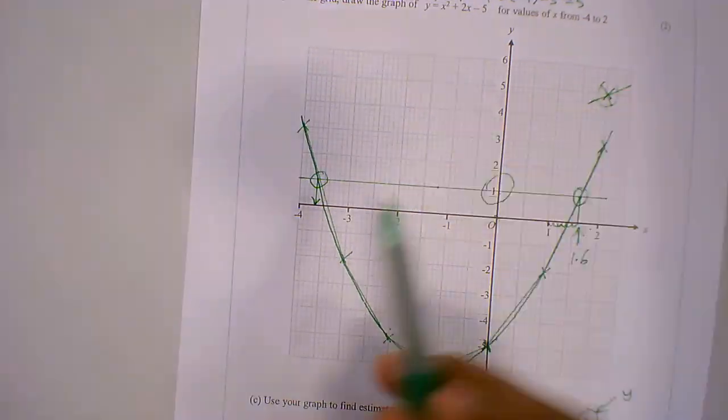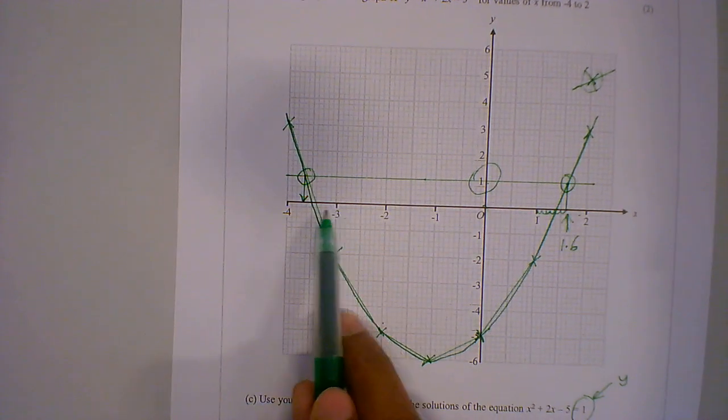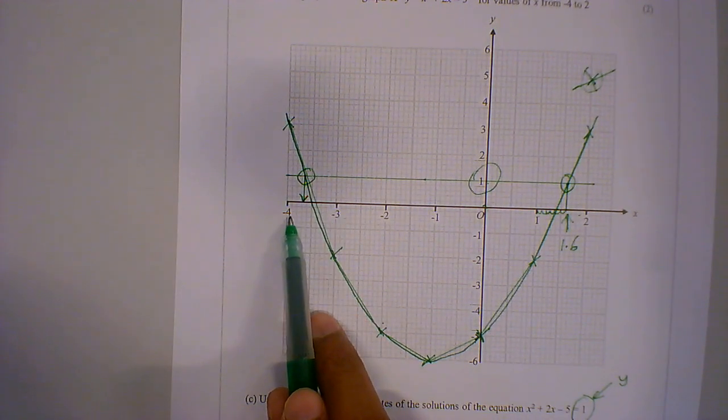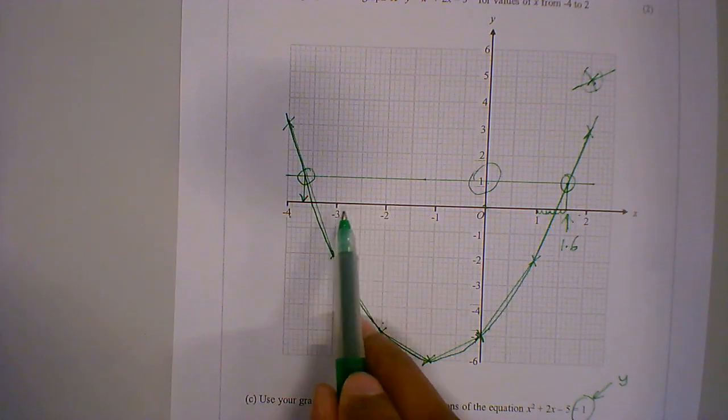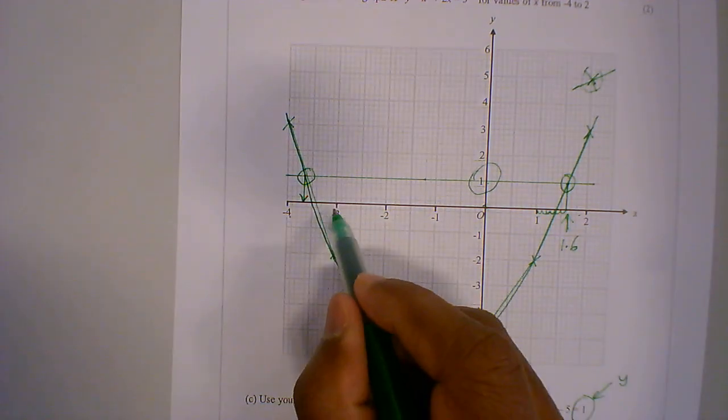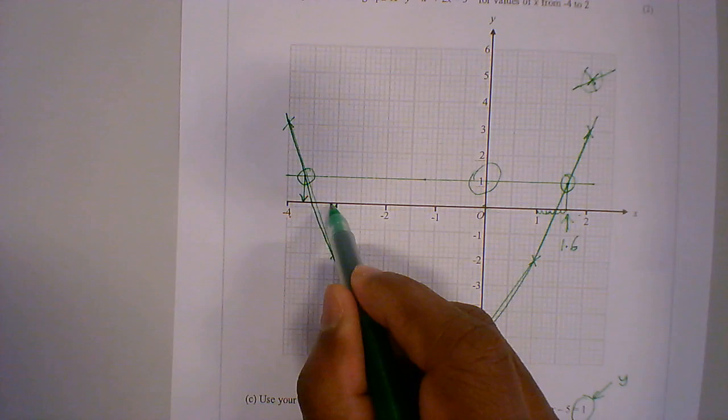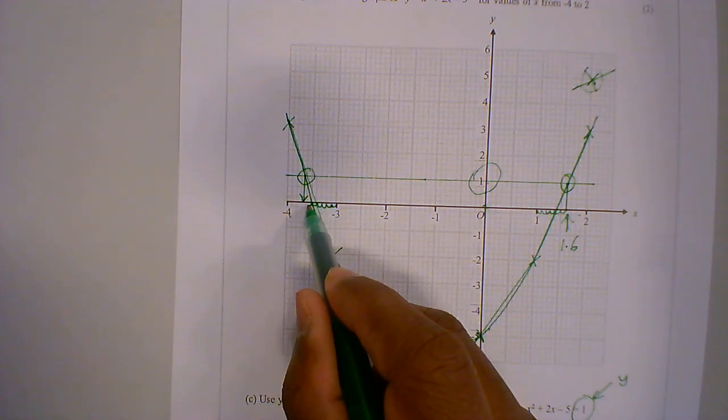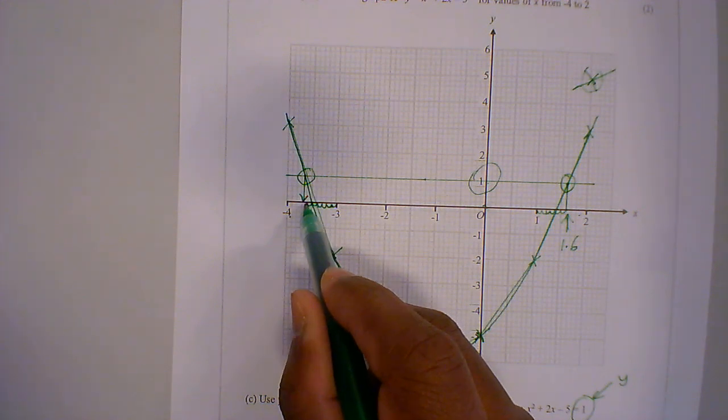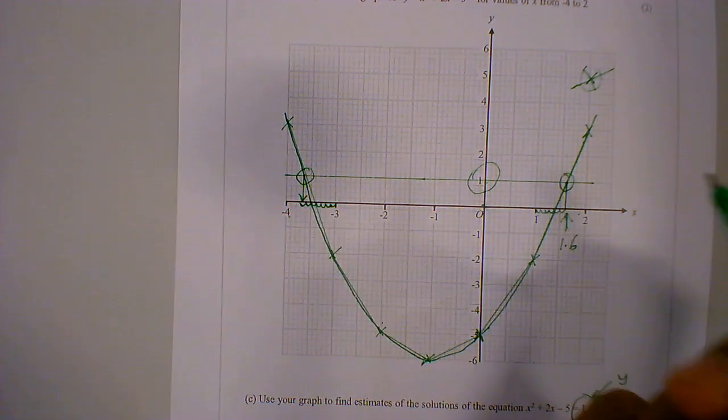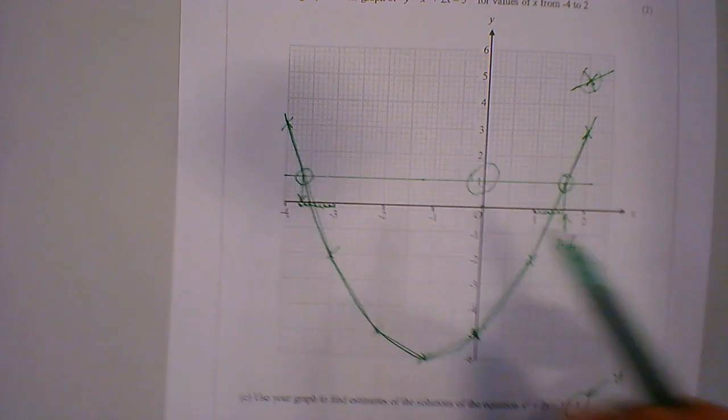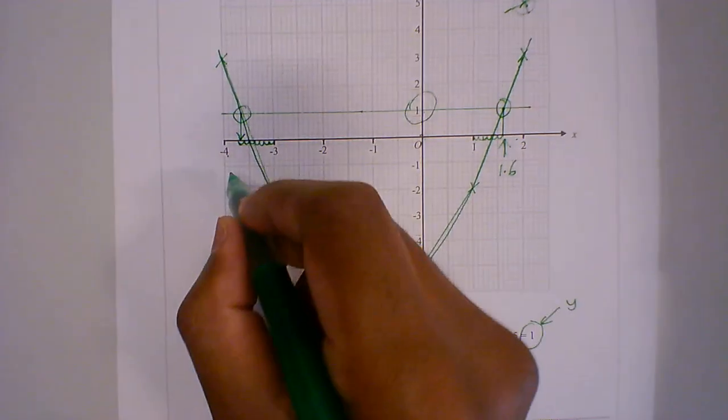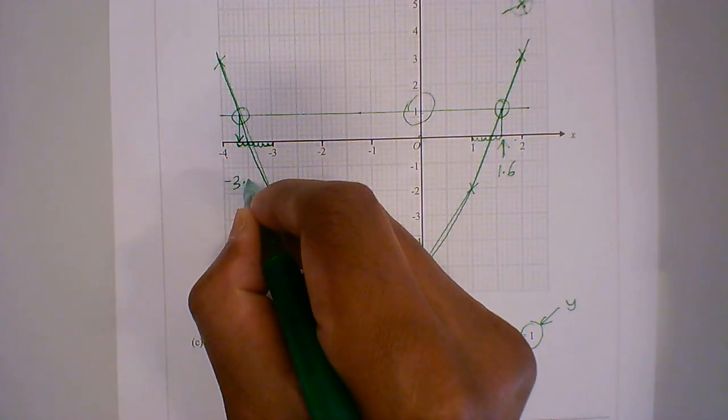I'm going from -3 to -4. 1, 2, 3, 4, 5, 6, 7. So I've got 7 squares on this side, and this is -3.7.